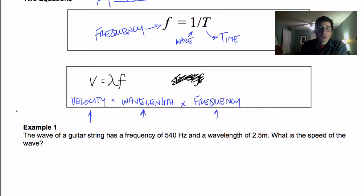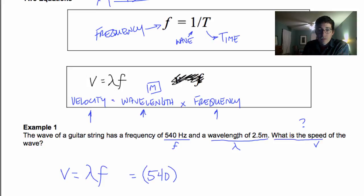So let's take a look at an example. The wave of a guitar string has a frequency, so we're looking at the F right here, of 540 hertz. Go ahead and underline that and put a little F under it. And a wavelength of 2.5 meters. Oh, I forgot to say that. Wavelength is measured in meters. What is the speed? Here's our question right here. And we know speed is velocity. So we can pull our equation down. We've got velocity equals the wavelength times the frequency. I don't need to rearrange anything because my question mark is on its own. I don't know the velocity, so I just need to do this velocity is equal to my frequency, so 540, times my wavelength, 2.5. And this comes out to 1,350, and our units are meters per second.